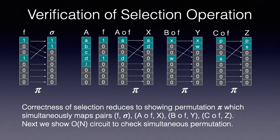Consider the column a circle f, which is obtained by taking component-wise product of a and f. The column a circle f is identical to column a, wherever f is 1, and is zeroed out elsewhere. We refer to such a column a circle f as masked column a. Now, we observe that the permutation that maps f to sigma, also maps masked columns a, b and c to columns x, y and z respectively. The correctness of the selection operation reduces to showing a permutation that simultaneously maps f to sigma and masked columns a, b and c to x, y and z respectively. We now describe checking this simultaneous permutation property.